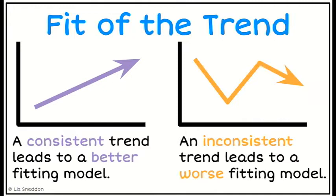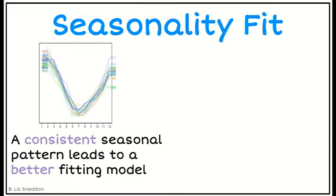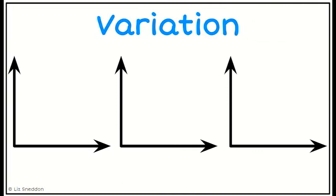The third factor we think about is seasonality. If we have a seasonality pattern where each year it's going down at the same times and going up at the same times — a lovely consistent seasonal pattern — you're going to get a good fit on your model. Whereas if your seasonality is inconsistent, sometimes going up and sometimes going down in different ways, that's going to lead to a poor fitting model.